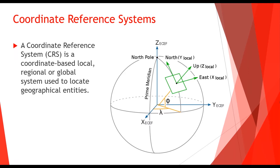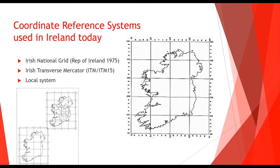Coordinate reference systems used in Ireland today: we have Irish National Grid, which can also be called Republic of Ireland 1975 — just so you're aware, they both mean the exact same thing. We have Irish Transverse Mercator, which has since been superseded by Irish Transverse Mercator ITM15. We also have users using local systems who might want to shift or rotate their grids so they're perpendicular or parallel running up their site, making offsets a little easier.